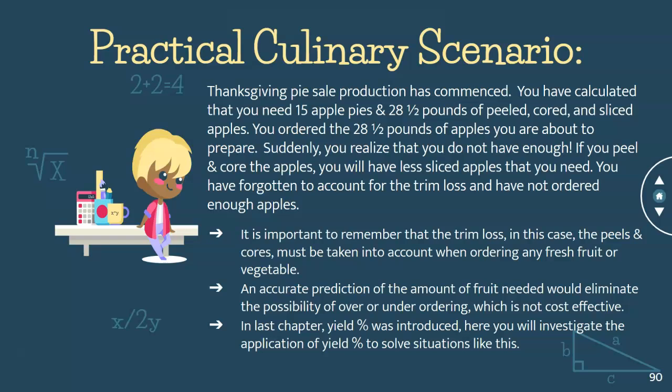In this scenario, it's important to remember that trim loss — meaning the peels and cores — needs to be taken into account when ordering any fresh produce like fruits and vegetables. You can predict how much extra you need, but without doing an actual calculation you won't really know. You don't want too much and you don't want too little, as neither is cost effective. It's really important that you know how to apply these formulas.